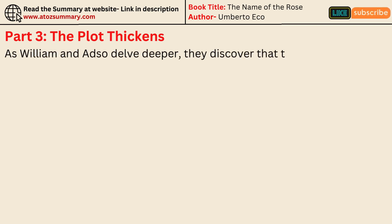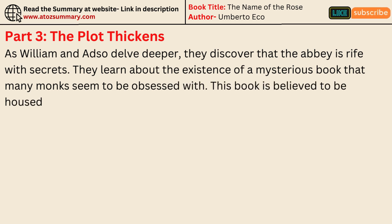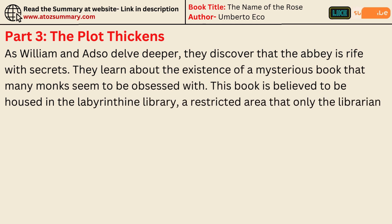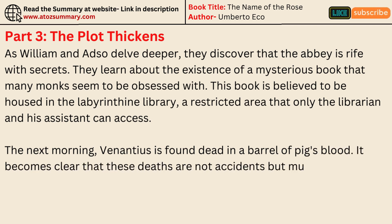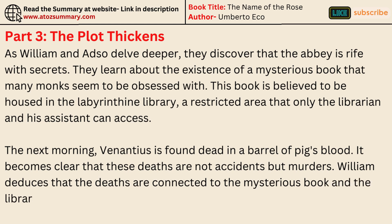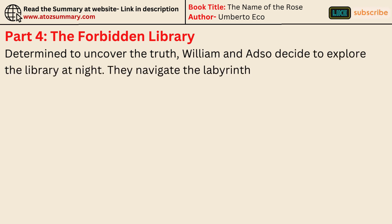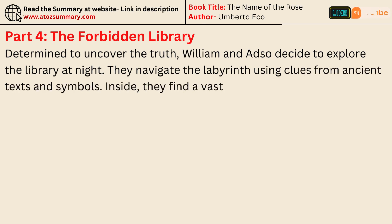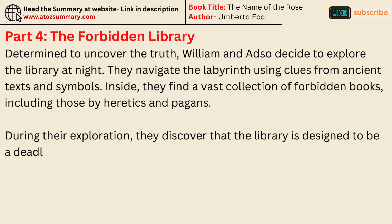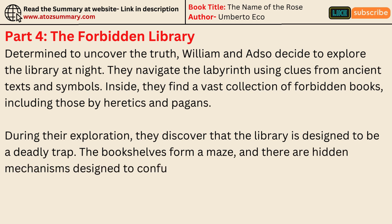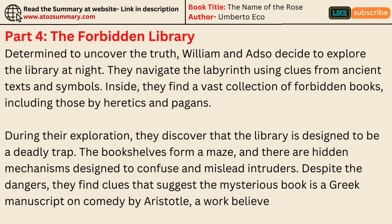As William and Adso delve deeper, they discover that the abbey is rife with secrets. They learn about the existence of a mysterious book that many monks seem to be obsessed with. This book is believed to be housed in the Labyrinthine Library, a restricted area that only the librarian and his assistant can access. The next morning, Vinancius is found dead in a barrel of pig's blood, making it clear that these deaths are not accidents but murders. William deduces that the deaths are connected to the mysterious book and the library. Exploring the library at night, William and Adso navigate the labyrinth using clues from ancient texts and symbols, finding a vast collection of forbidden books — including those by heretics and pagans — and discovering that the library is designed to be a deadly trap with hidden mechanisms to confuse intruders. They find clues suggesting the mysterious book is a lost Greek manuscript on comedy by Aristotle.